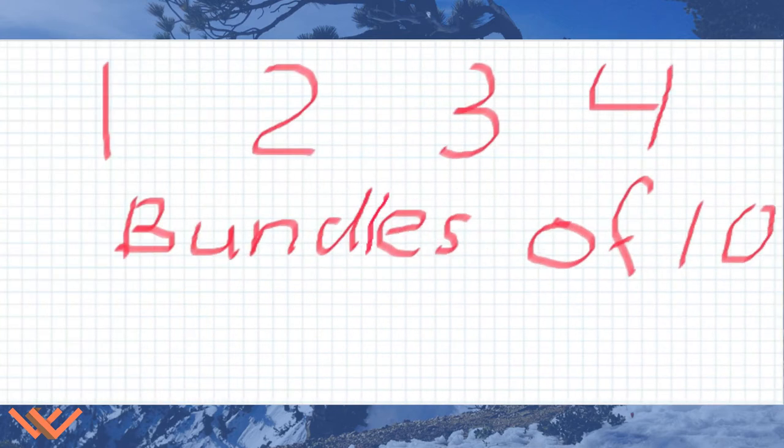Alright, so if I say we have one, two, three, four, and I want you to make bundles of ten, what do you need to do? The nice thing about ten is that one times ten is equal to ten. So we can just put a zero here.